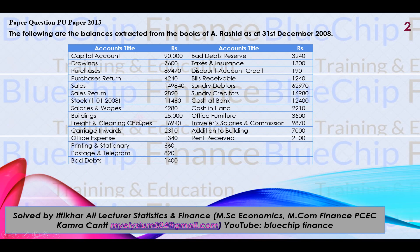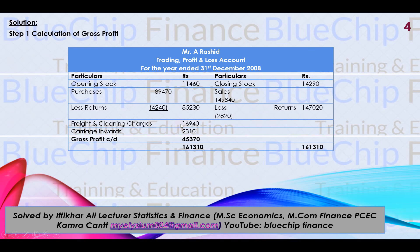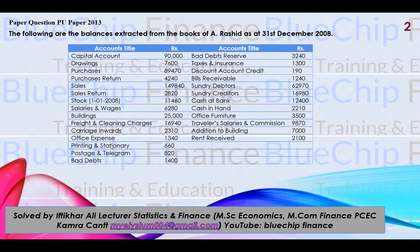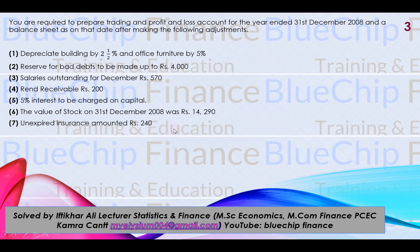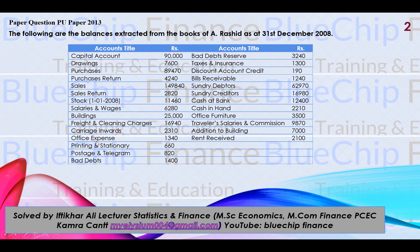Freight and Clearing Charges is a direct expense, so it goes on the debit side of the Trading Account: 16,940. Carriage Inward is also a direct expense and goes on the debit side of the Trading Account: 2,310. Office Expense is an indirect expense and goes on the debit side of the Profit & Loss Account, along with Printing & Stationery and Postage & Telegram — these three are all indirect expenses placed on the debit side of the Profit & Loss Account.